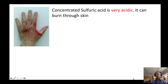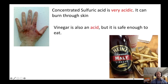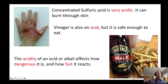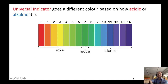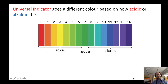Concentrated sulfuric acid is very, very acidic, and you can see here there's a burn of someone who's had sulfuric acid poured on them. But vinegar is also an acid, and it's safe enough to eat. So how can this be the case? We have to think about how acidic something is. The acidity of an acid or an alkali affects how dangerous it is and how fast it will react. We create something called the pH scale that goes from zero through to 14. Zero is the most acidic, 14 is the most alkaline — the lower the number, the more acidic it is. And we can use a chemical called universal indicator to work out what the pH will be, because it changes color based on whether it's more acidic or more alkaline.